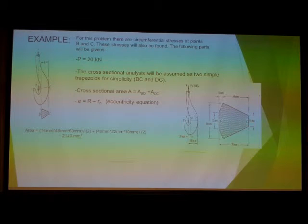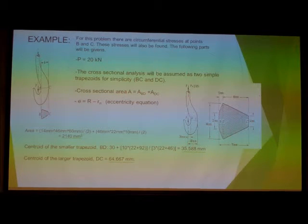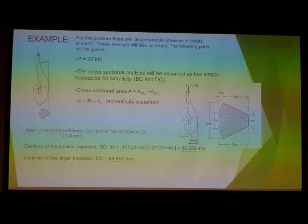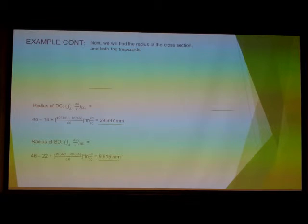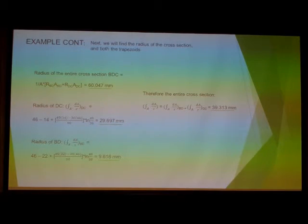So, first we need the area of the entire thing. And then, from there, we can find, we need the centroid of the smaller trapezoid and the centroid of the larger. So, this will get us later to the moment, which will get us to the circumferential stresses. Next, we have to find the radius of the cross-section, and we need both the trapezoid's radius. So, first we'll find DC, which was one of the trapezoids. That was the radius of that one. And then, the radius of BD was the other one. And then, to take the overall radius of the entire cross-section, you can add those together, and it's by value here. And then, the entire cross-section is this one, plus the 29, plus the 9, and you get 39.31 millimeters. And that's for the entire cross-section, the radius of the entire cross-section.